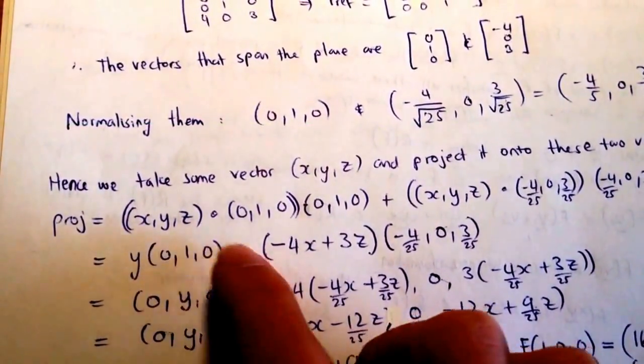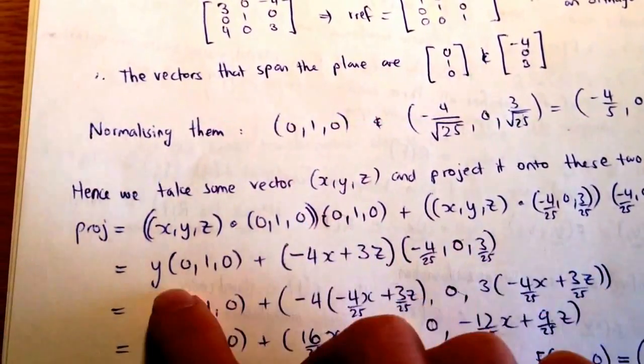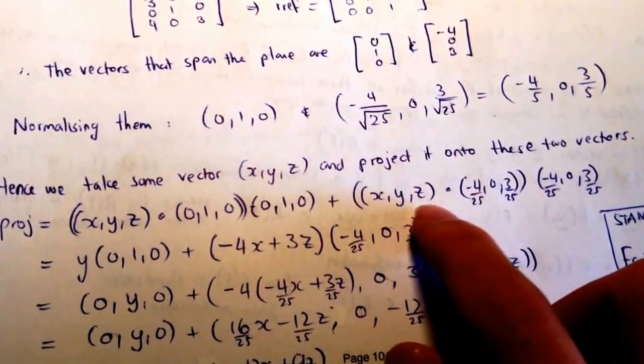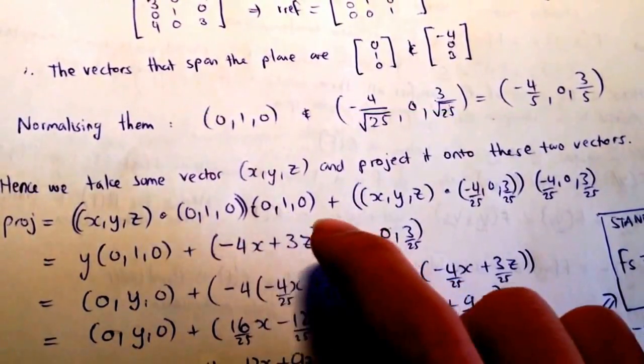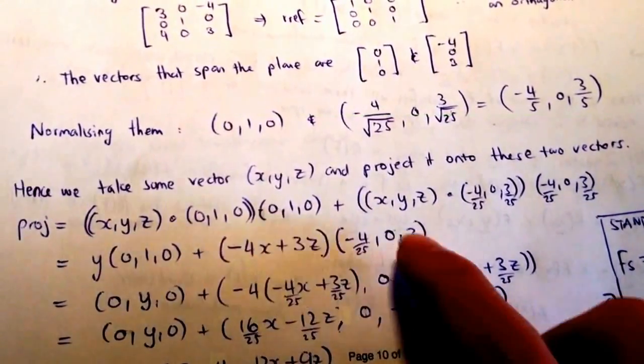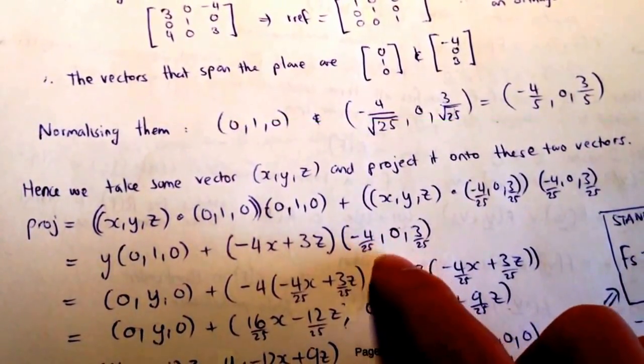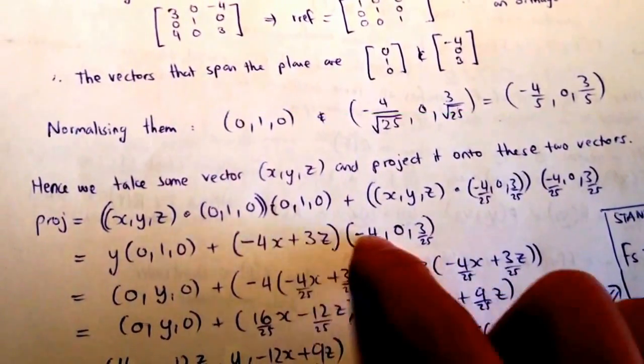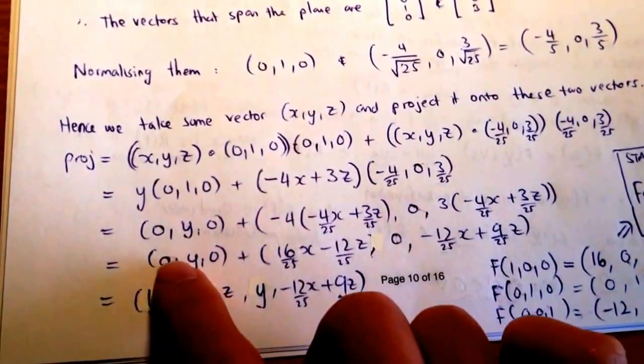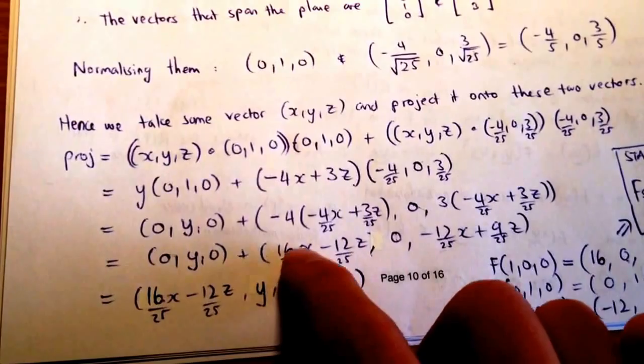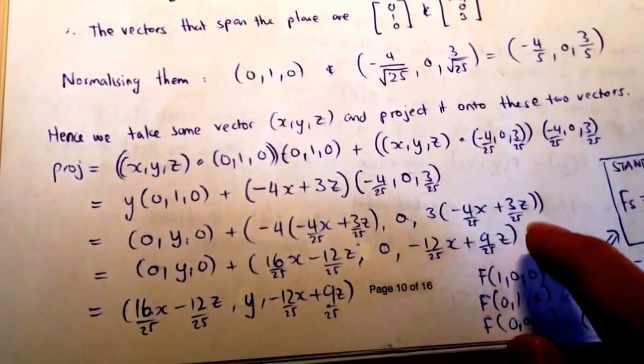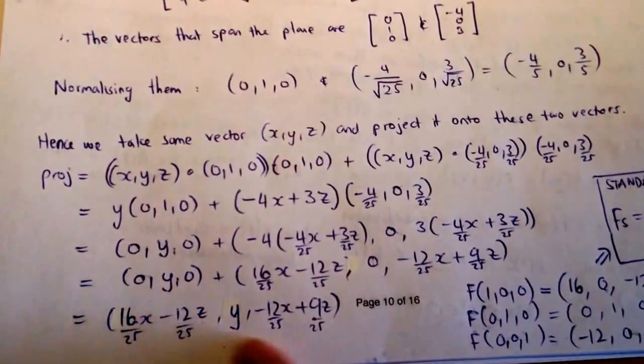We then do some arranging there. We multiply each coordinate out. We're going to get y lots of 0, 1, 0. And here we work out the dot product. We've got negative 4 on 25 here. That should actually be divided by 25 there. So those two both there should be divided by 25. So that should be 3 on 25 and 4 on 25. On the next line I fixed it though. So we end up with negative 4 on 25, 0, 3 on 25, multiplied by this scalar. Let's actually divide by 25. Then we simply expand out the components. We end up with 0, y, 0, plus 16 on 25 x, take 12 on 25 z, 0, negative 12 on 25 x, plus 9 on 25 z. Got our final form here.